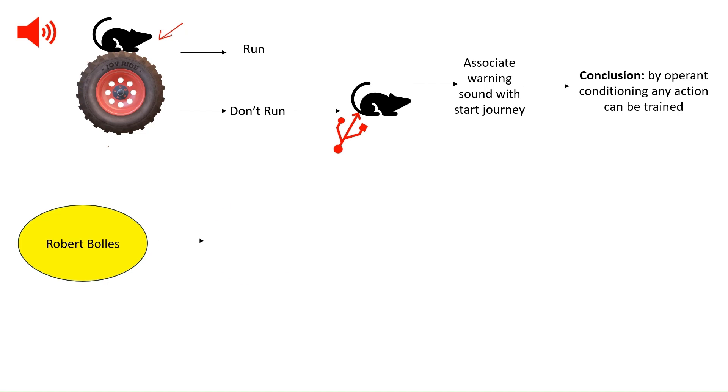Now Robert Bowles said that the above procedure allowed the rat to run with the warning sound, but with the same procedure we cannot train the rat to stand upright. Doesn't matter if we are giving electric shock or whatever, the rat will not be able to associate or learn from this result.